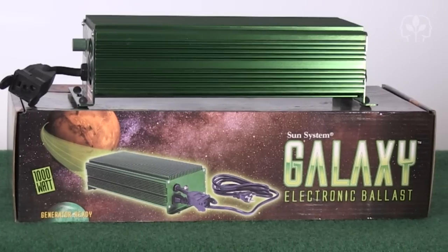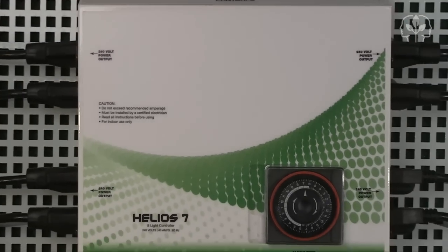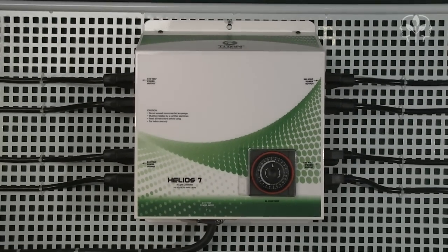You can use either electronic or magnetic ballasts, or a mixture of both. But remember, they must be rated for 240 volts for use with the Helio 7.